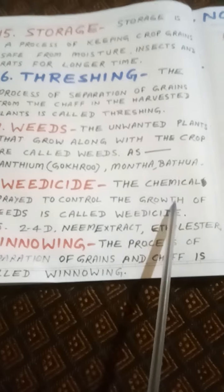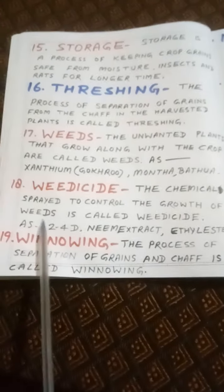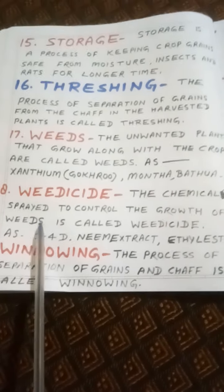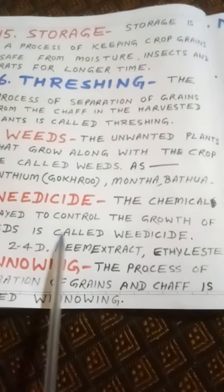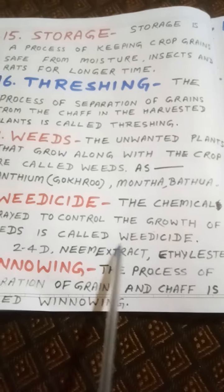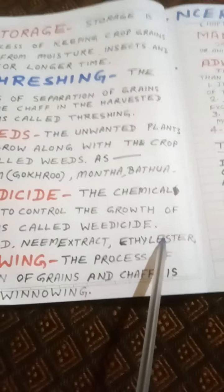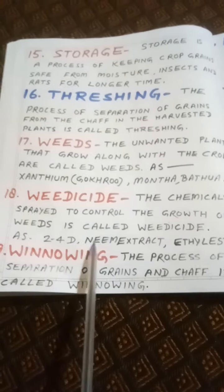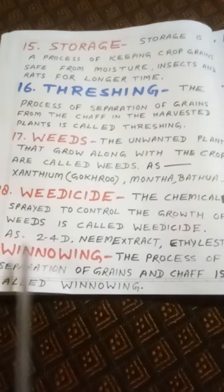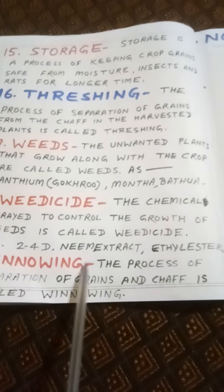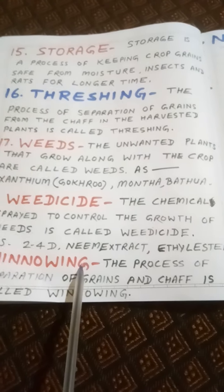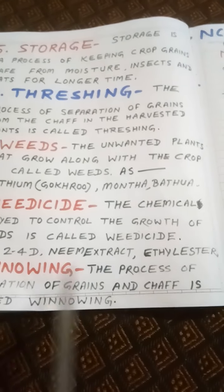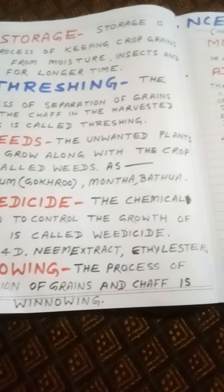Next keyword: Weedicides. The chemical sprayed to control the growth of weeds is called a weedicide. Examples include 2,4-D, neem extract, and ethyl ester.